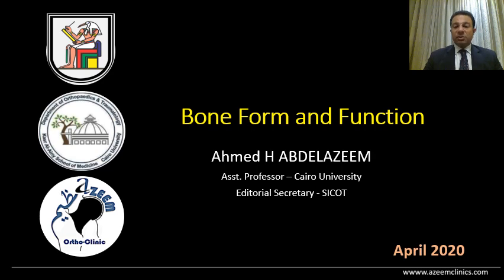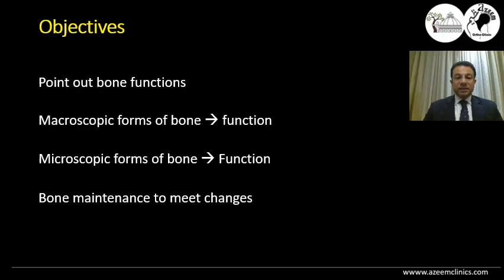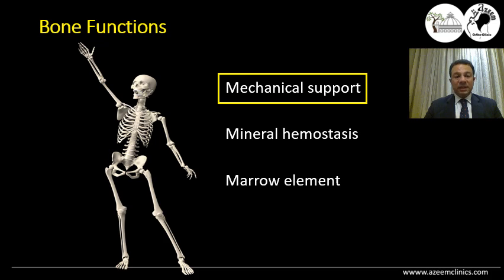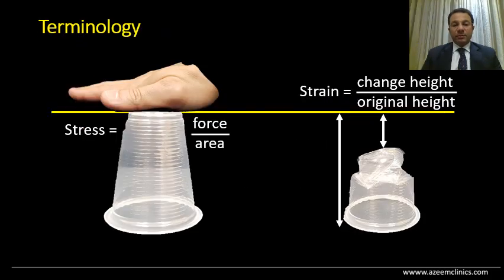In this video I'll be speaking about bone form and function. We will go rapidly through these objectives, discussing the bone material properties and how these properties suit the function of the bone. If we review rapidly the bone functions, we will find that the bone has three main functions: mechanical support, mineral homeostasis, and its marrow elements producing blood cells. The most important in this presentation is how the bone material and properties suit the mechanical support function.